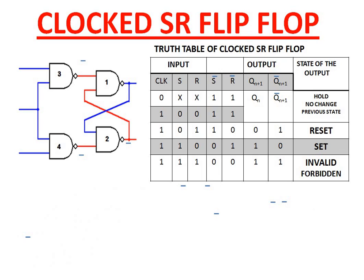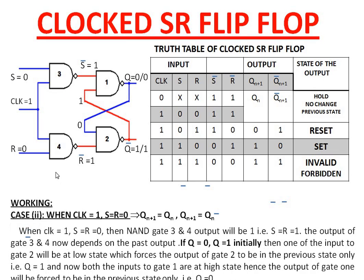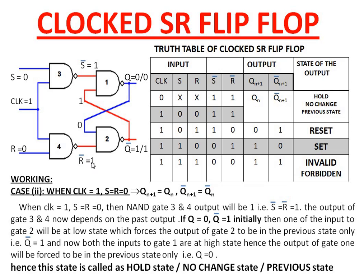Case 2: When clock is applied but S equals R equals zero. When S equals R equals zero, gates 3 and 4 produce a high output. This is like the previous case — the output of gates 1 and 2 depends on the previous output. Hence, it enters into hold state; there is no change in the output. This state is also called the previous state.